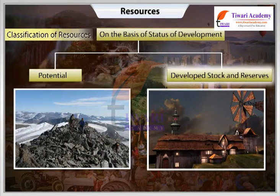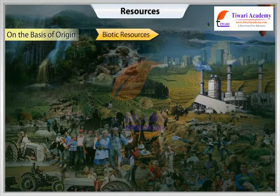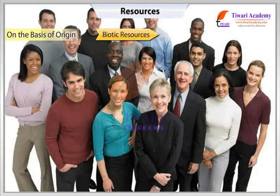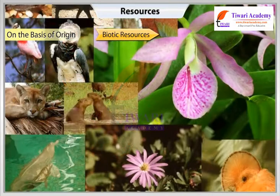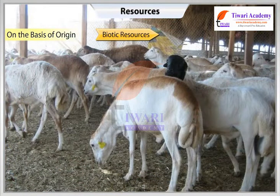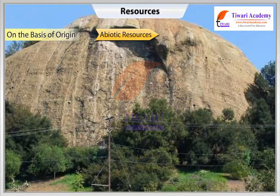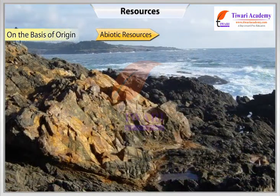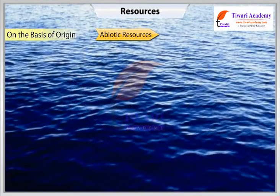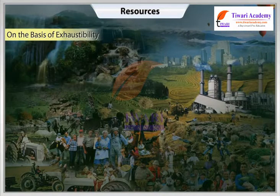On the basis of origin, biotic resources are obtained from the biosphere and have life, such as human beings, flora and fauna, fisheries, livestock, etc. Abiotic resources are those things which are composed of non-living things, for example rocks, metals, water, and air.